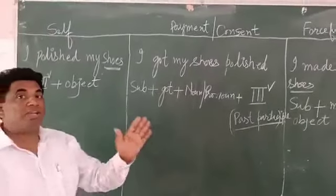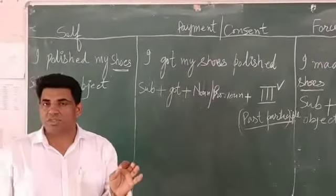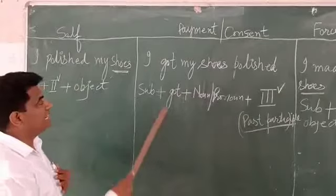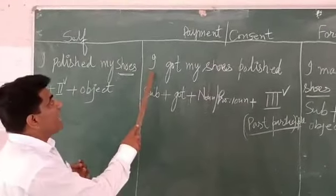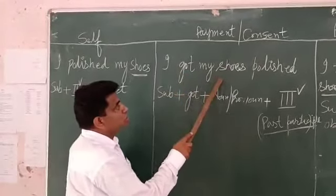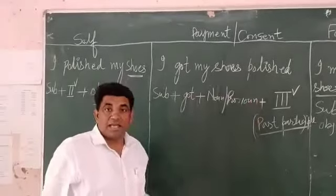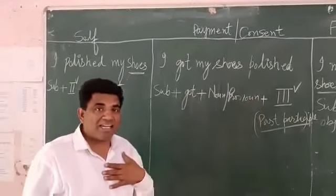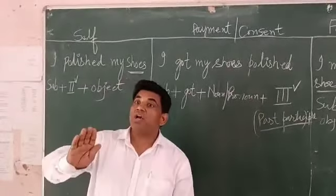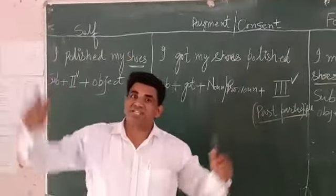The second structure is a bit difficult and most students face problems with it. The sentence is: 'I got my shoes polished.' Here, I didn't polish my shoes myself — I got my shoes polished by someone else.